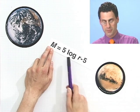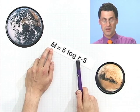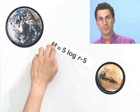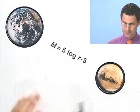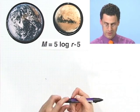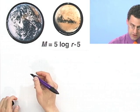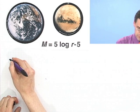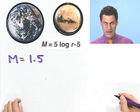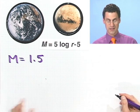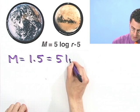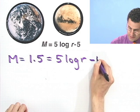And what I want to do is determine its distance from the earth. So I'm given M and I want to find r. Let's think about how we do that. We're told that M equals 1.5, and now my mission is to find r. So what do I do? Well, I know that 1.5 equals 5 log r minus 5.